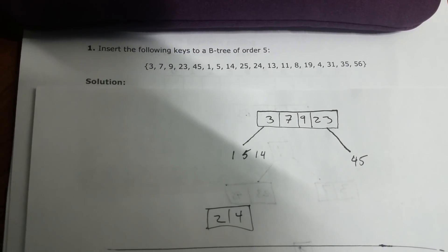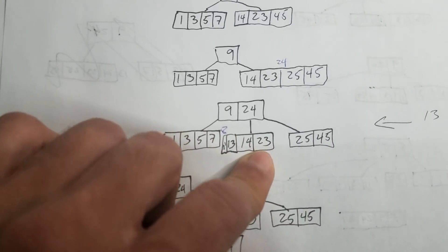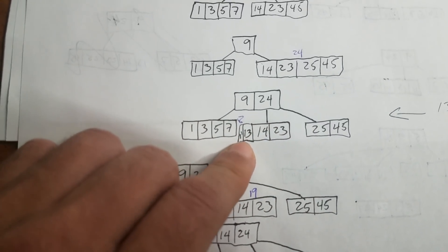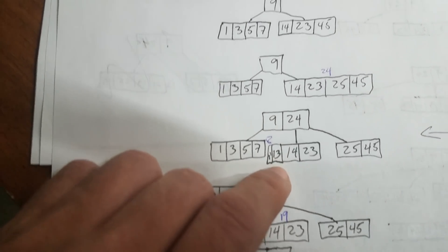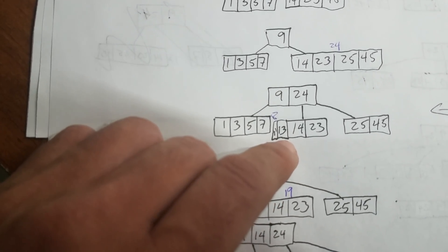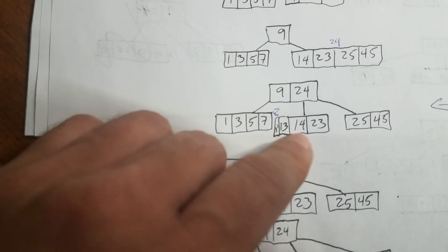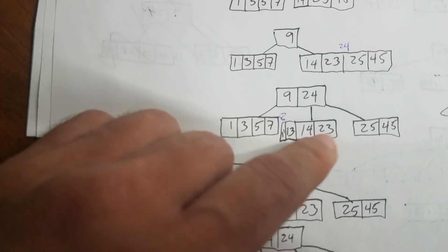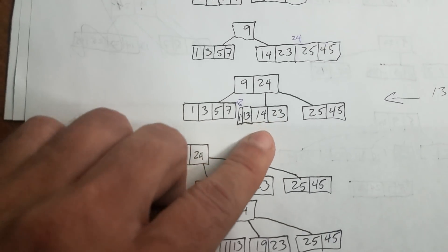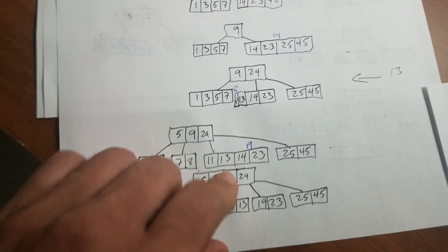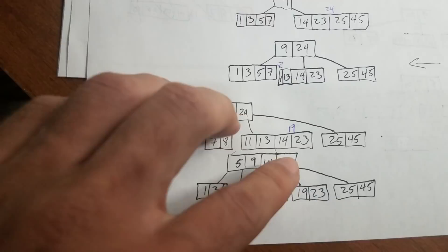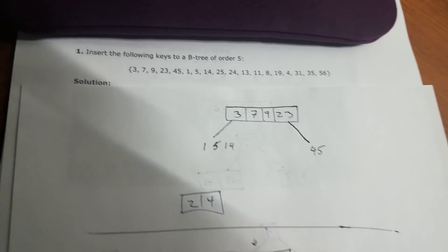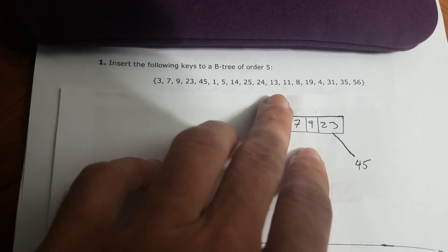After that, we need to add 13 and 11. We simply add it to the left here since we have some room. Remember, it has to be a maximum of four nodes before we can branch out, before we can split it. The next one is going to be 13.